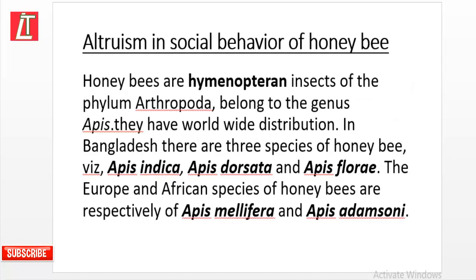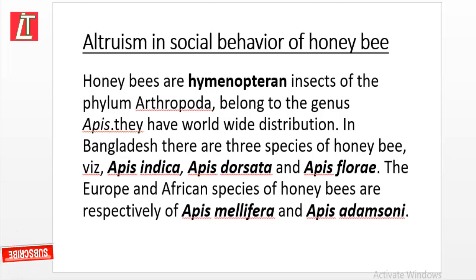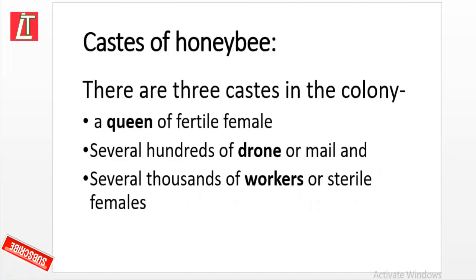Altruism in social behavior of honeybees: honeybees are hymenopteran insects of the phylum Arthropoda belonging to the genus Apis. They have worldwide distribution. In Bangladesh there are three species of honeybee: Apis indica, Apis dorsata, and Apis florae. The European and African species are Apis mellifera and Apis adamsoni respectively.